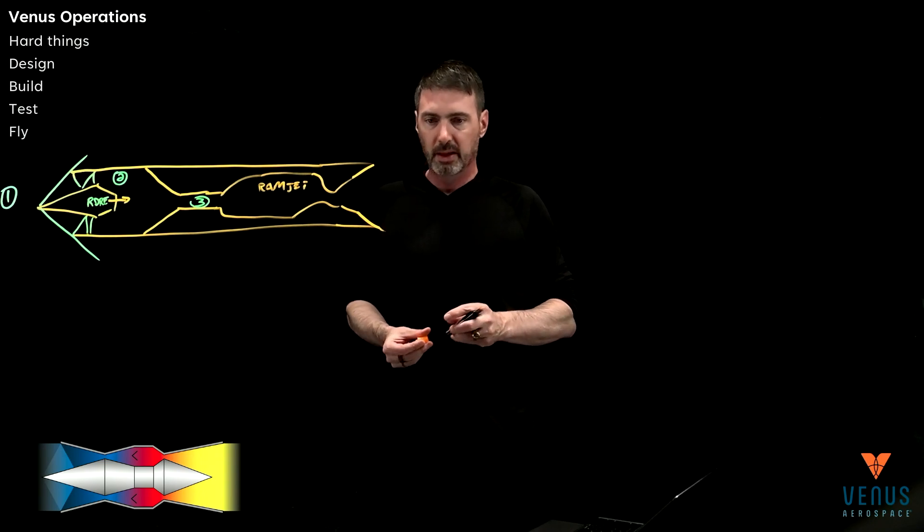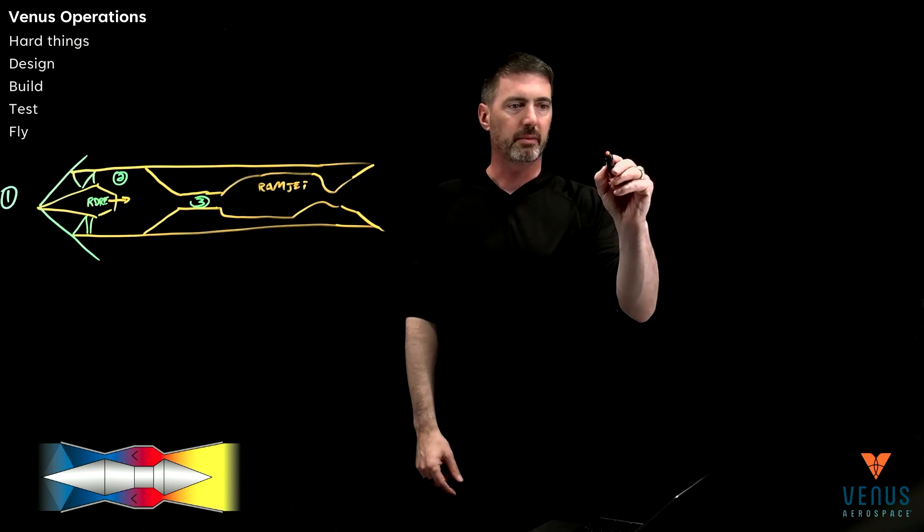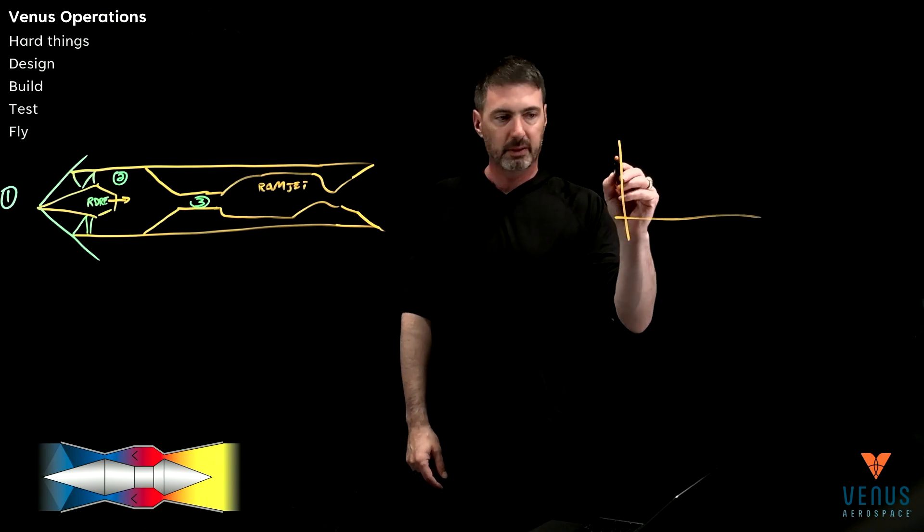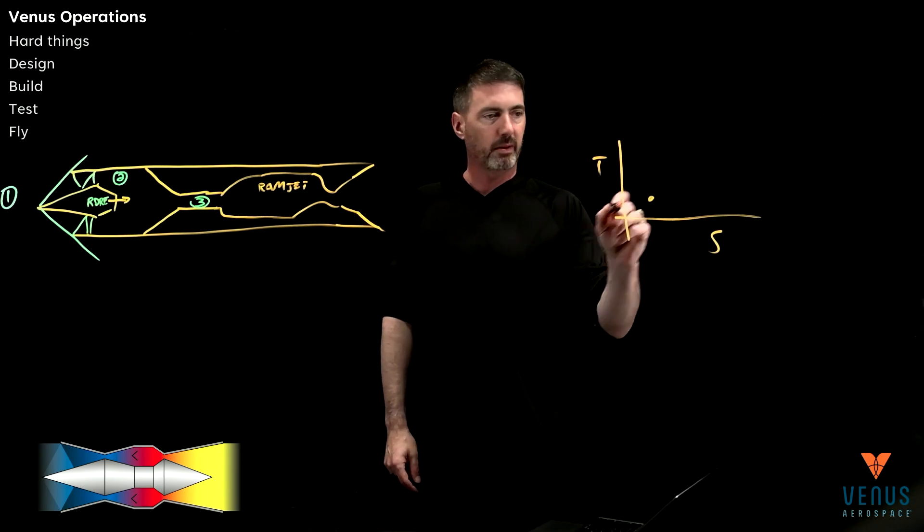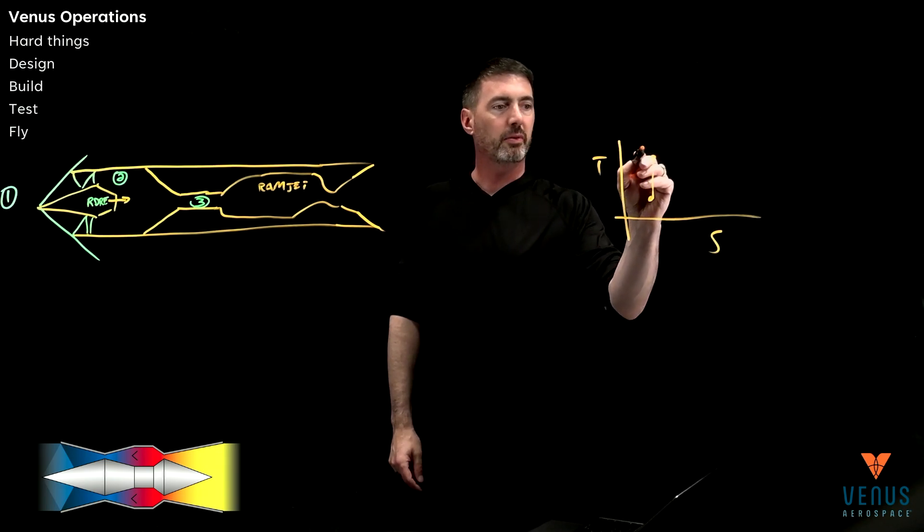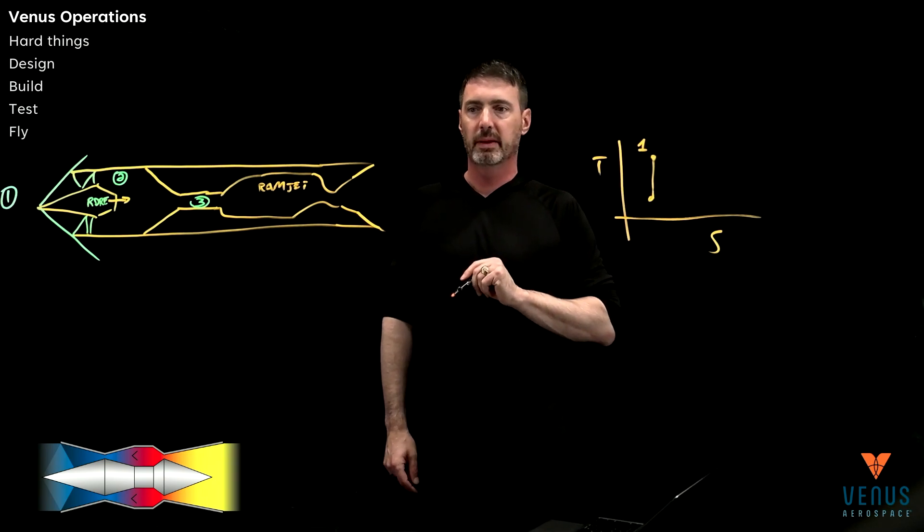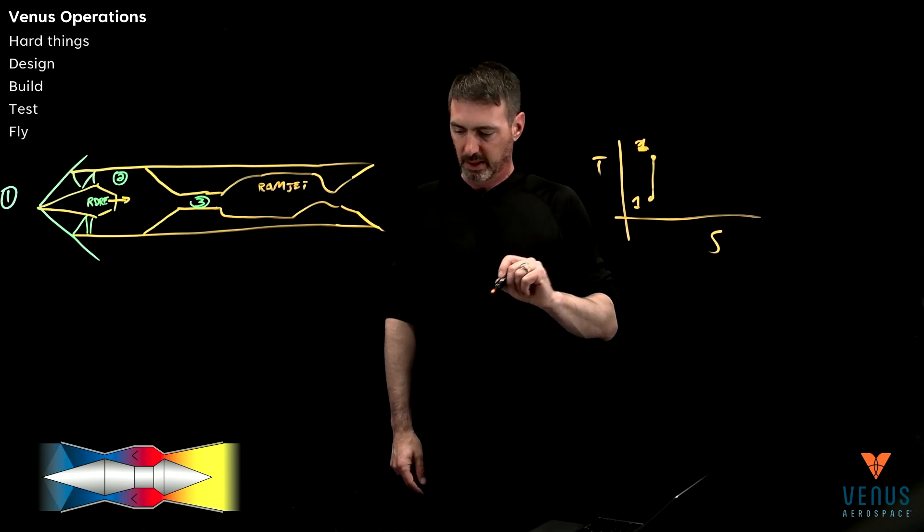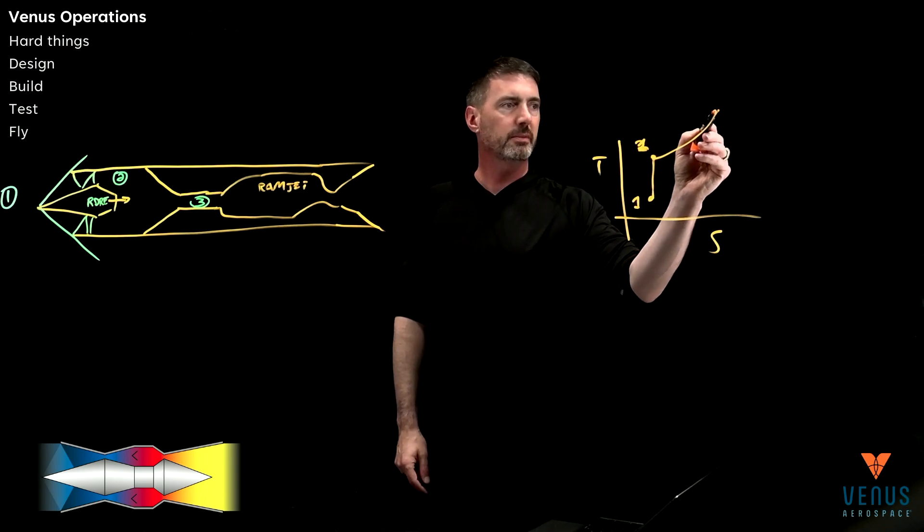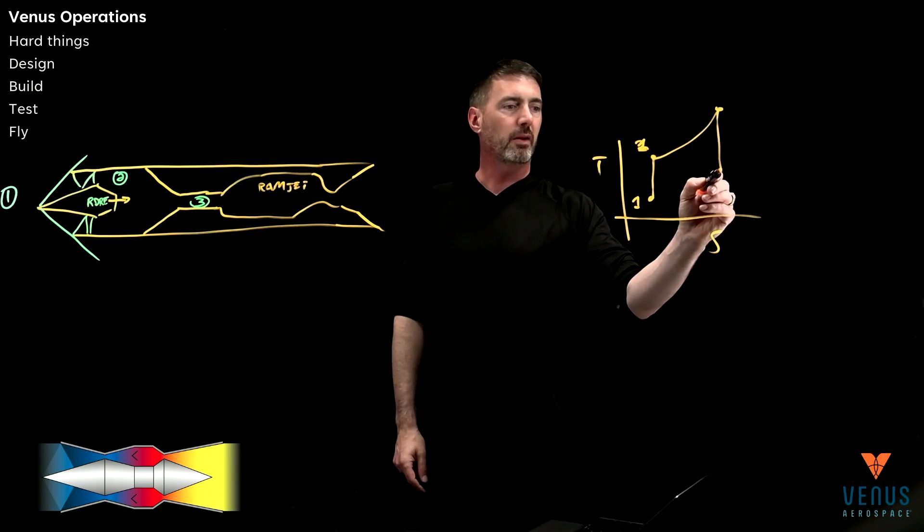And so if you want to start off looking at this from a TS diagram, in the end, you're talking about a system that is starting at zero, it is compressing up to one, compressing to two, that's fine. And then heat addition, three, and then our nozzle.